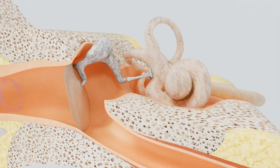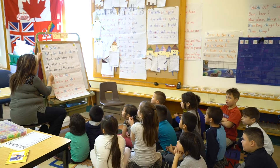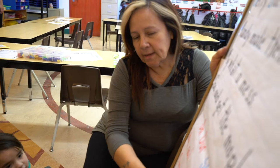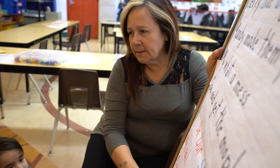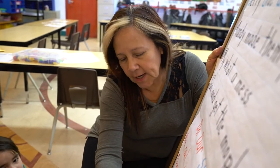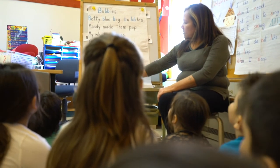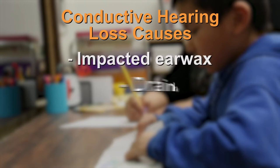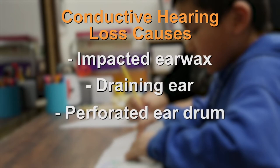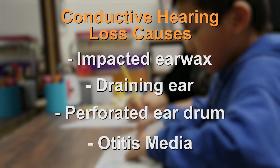A conductive hearing loss is a problem in the outer or middle ear. In many cases, a conductive hearing loss can be medically or surgically treated. One characteristic of this hearing loss is that the student may still be able to hear his or her own voice at a normal level, but is not able to hear other people. Four common causes of conductive hearing loss are impacted earwax, draining ear, perforated eardrum, and middle ear infection, also known as otitis media.